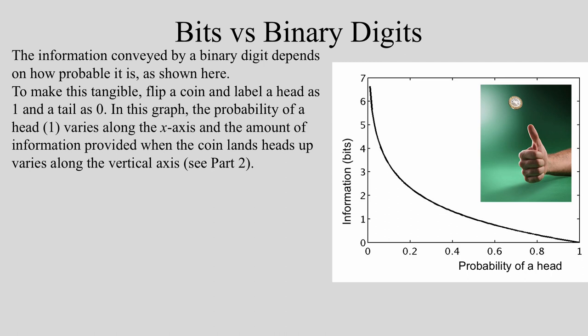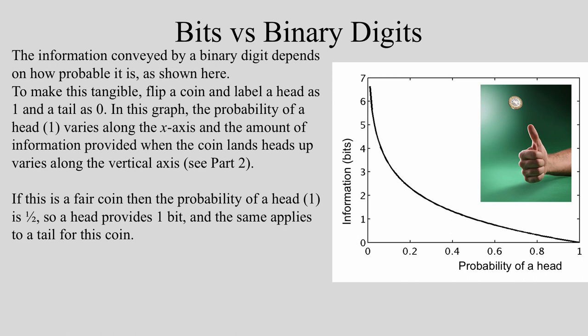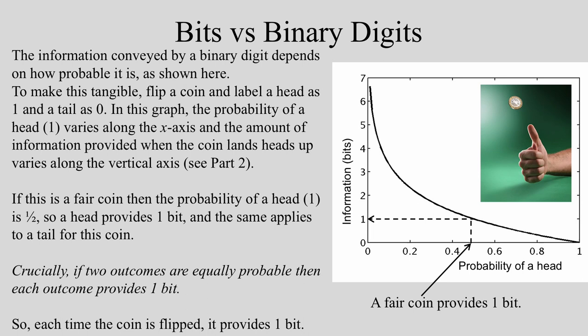The information conveyed by a binary digit depends on how probable it is. To make this tangible, flip a coin and label a head as 1 and a tail as 0. In this graph, the probability of a head varies along the x-axis and the amount of information provided varies along the vertical axis. If this is a fair coin, then the probability of a head is one half, so a head provides one bit, and the same applies to a tail.